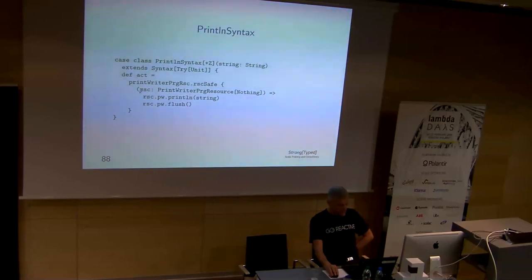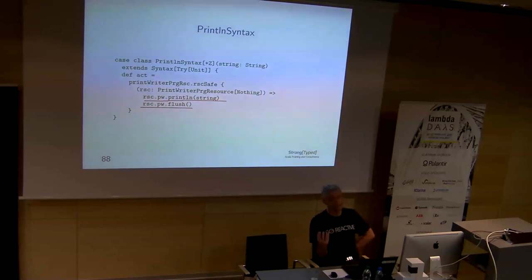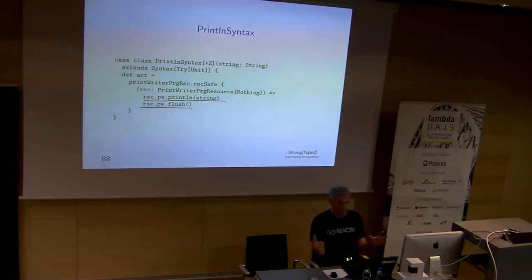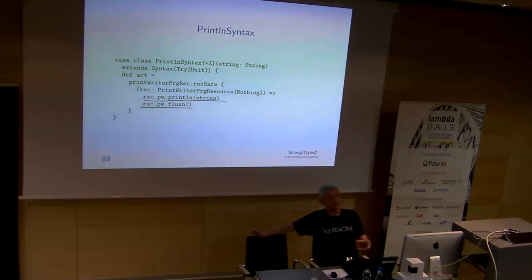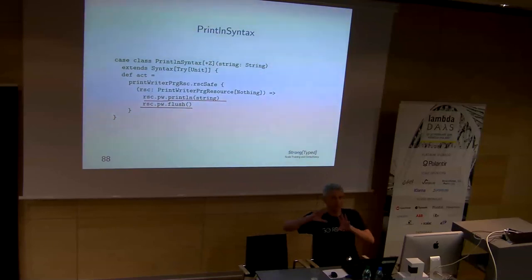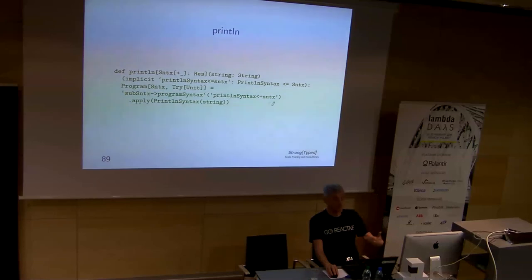I also have my println syntax — this is really like printing a string and flushing the PrintWriter, but it's not doing it actively. It's encapsulated in a box. For testing purposes I can completely ignore it and log what needs to be done. Runach calls this in his book a 'smart constructor,' and this is my println: it's a constructor building that data structure.